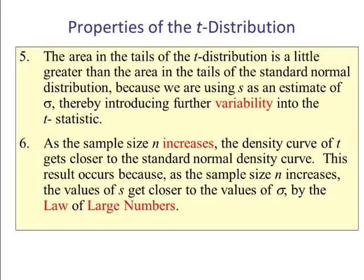Number five: The area in the tails of the t distribution is a little greater than the area in the tails of the standard normal distribution. This is because we are using s as an estimate of sigma, thereby introducing further variability into what's called the t statistic. Now that t statistic is what we saw a few slides back: t equals x bar minus mu divided by the quantity s divided by square root of n. Number six: As the sample size n increases, the density curve of t gets closer to the standard normal curve. This result occurs because as the sample size n increases, the values of s, the sample standard deviation, get closer to the values of sigma, the population standard deviation, by the law of large numbers.